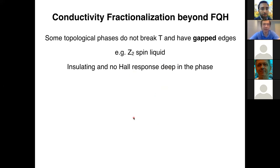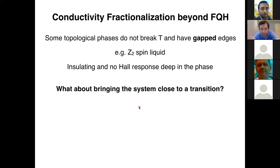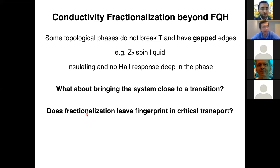Deep inside the Z2 spin liquid, it's an insulating state with a gap to all excitations and no Hall response due to time-reversal invariance. To see anything interesting, we should bring the system close to a phase transition where quantum fluctuations are stronger, amplifying the signals. The question becomes: does fractionalization of the spin symmetry leave a fingerprint in the critical transport? To measure spin fractionalization we need to measure spin transport.